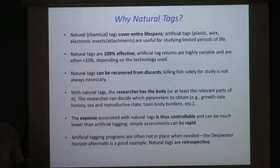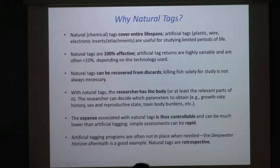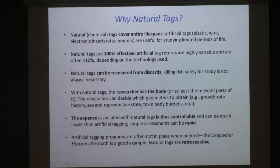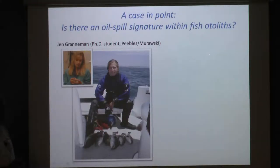Natural tags are inherently retrospective perspectives on what the fish has been doing in terms of its habitat. You don't have synoptic information when there's an event like Deepwater Horizon — it wasn't as if there were a whole lot of tagged fish that people could collect to assess the impacts. Programs just aren't as extensive as people outside the fisheries industry might expect. As a case in point, we'll start with our progress looking for an oil spill signature in fish otoliths — their ear bones.